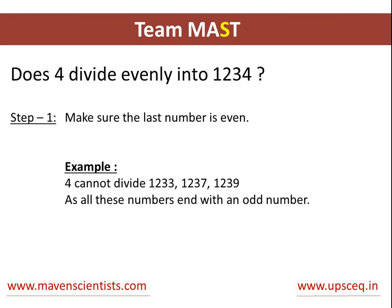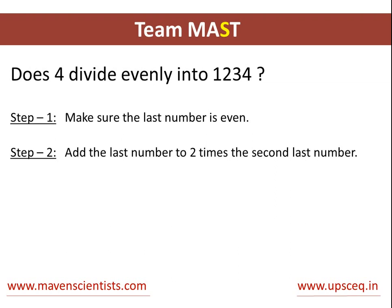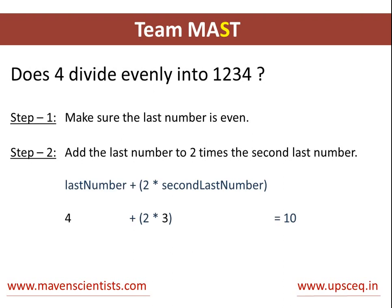Moving on to step 2, we have to add the last digit to 2 times the second last digit, which in this case gives you 10: 4 plus 2 times 3 equals 10. So now you just have to check whether 10 is divisible by 4 or not. Since 10 divided by 4 does not give an integer, the number 1234 is not divisible by 4.